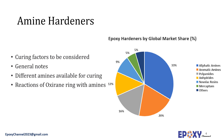A hardener generally has a reactive hydrogen that reacts with epoxide groups in the resin. Most classes of hardeners require high temperatures of around 150°C for complete curing. Insufficient heat during cure results in incomplete polymerization and leads to suboptimal mechanical, chemical, and heat resistant properties.